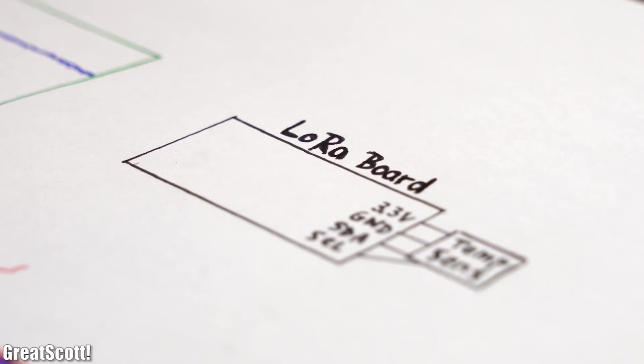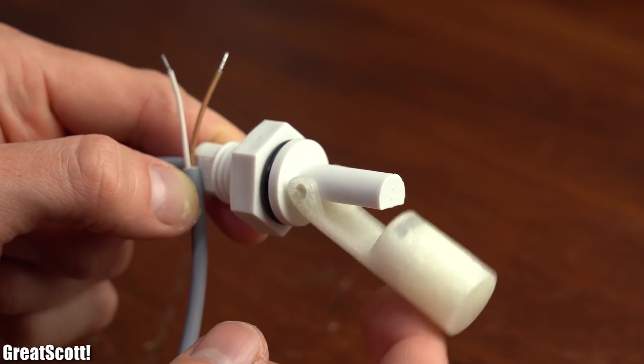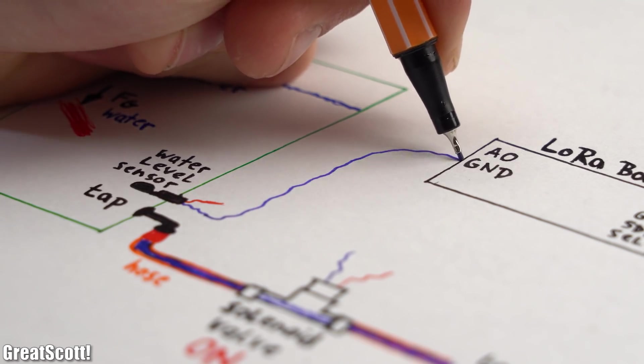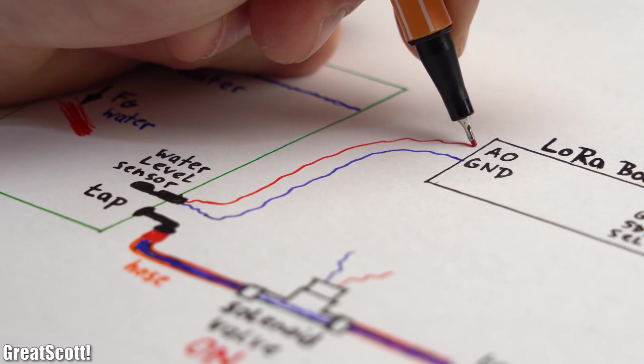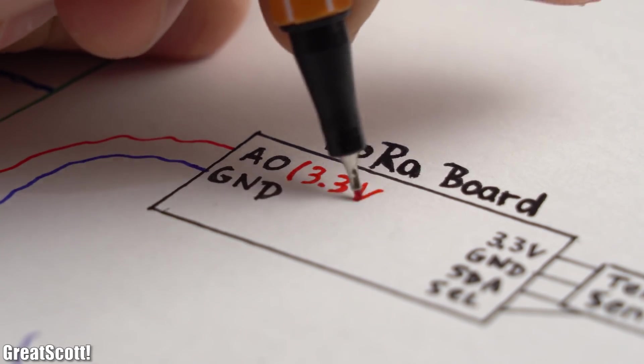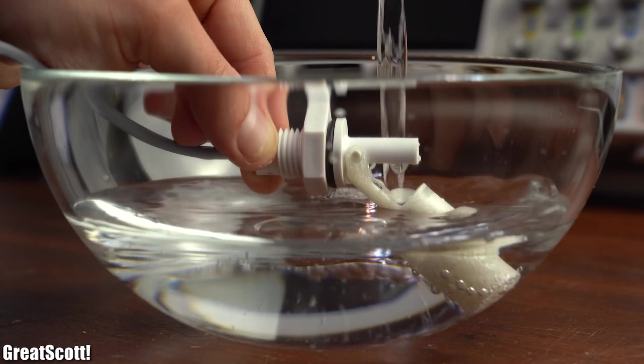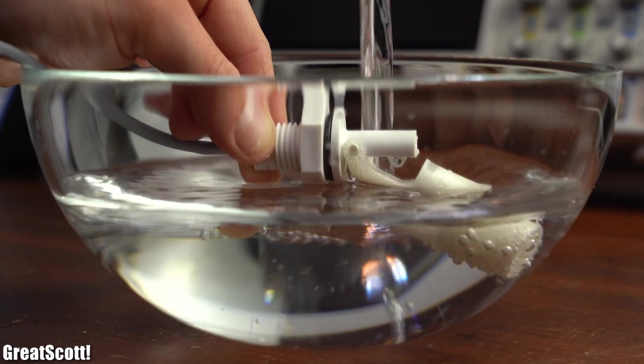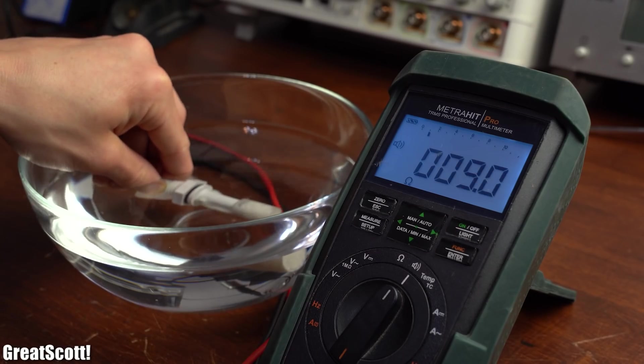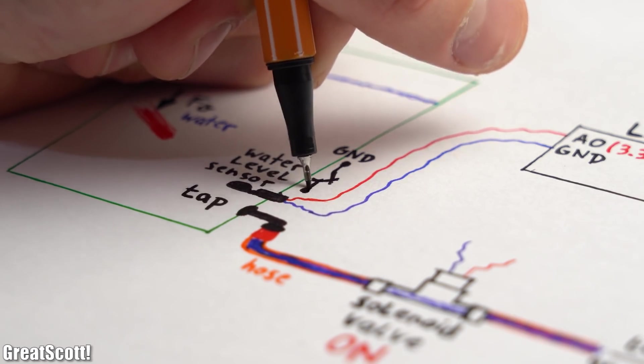And with that being said, what about the electronics side of things? Connecting the water level sensor was pretty straightforward. By connecting one side to ground and the other side to pin A0 of the LoRa board which will use its internal pull up resistor to pull the input up to 3.3V. As soon as there is enough water in the barrel, the sensor's buoy will rise up, close its internal reed switch and thus will let the LoRa board know that it can activate the solenoid valve.